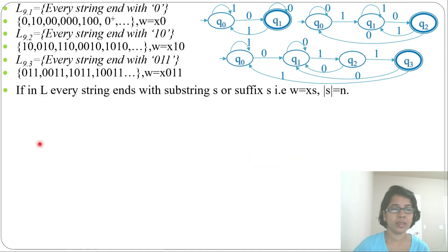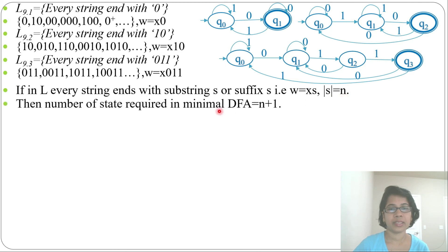In general, if every string ends with a substring s or suffix of length n, then the number of states required in the DFA equals n plus 1. For ending with 0 (length 1), it requires 1+1 = 2 states. For ending with 10 (length 2), it requires 2+1 = 3 states. For ending with 011 (length 3), it requires 3+1 = 4 states.